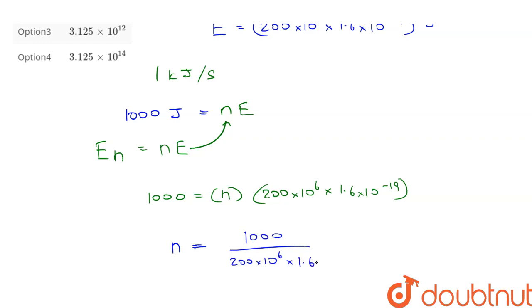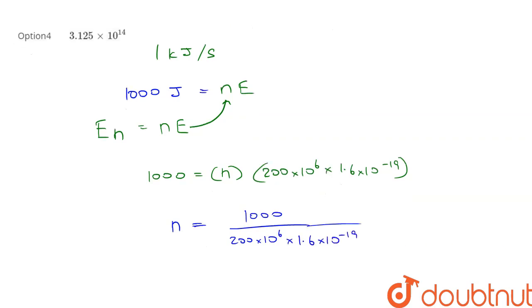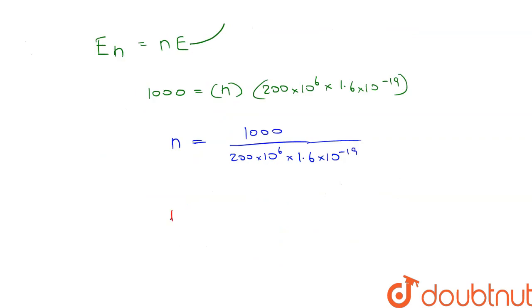Therefore, n = 1000 divided by (200 × 10^6 × 1.6 × 10^-19).